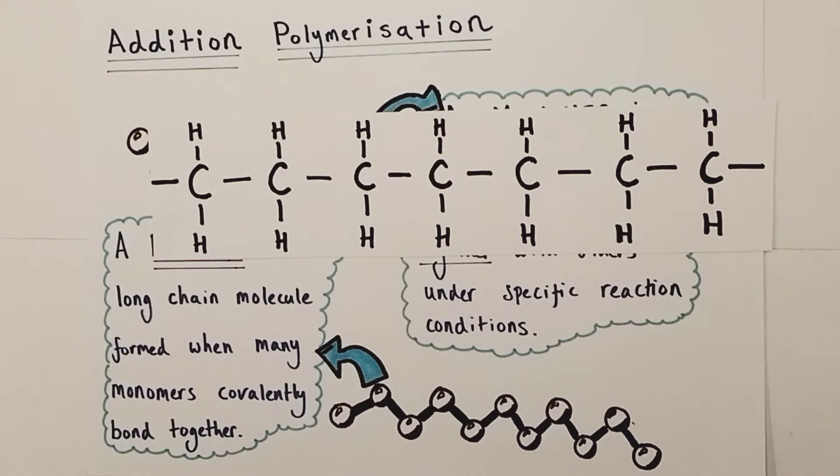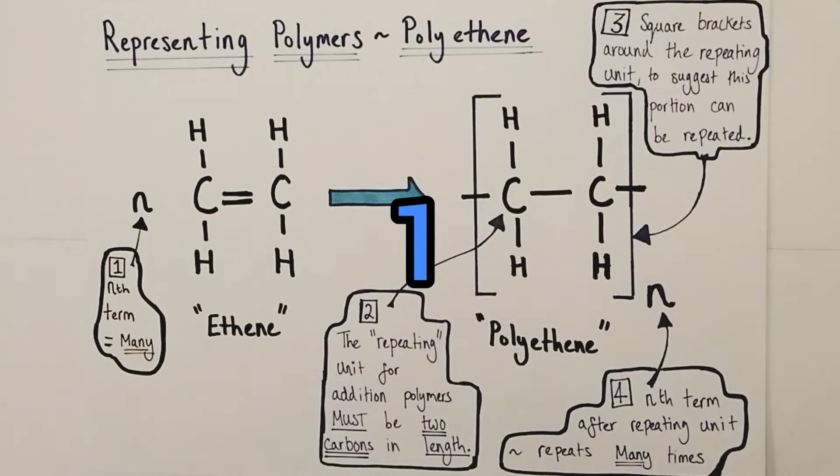So there must be a smarter and more rapid way of representing polymers, and there is, and we call it the repeating unit. The first example of a polymer repeating unit I'd like to start with is polyethene because it's a very common and simple example, and it will allow me to go through the key conventions of what you need to put into an equation to represent a polymer using the repeating unit.